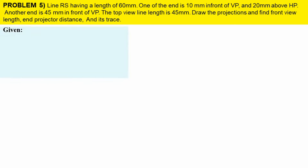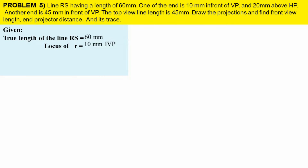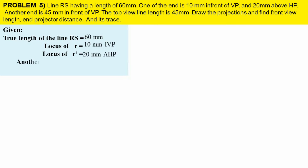Let's see the given data. They are giving the true length, so that is true length of line RS = 60 mm. One end is 10 mm in front of VP, so locus of R = 10 mm. The same end is 20 mm above the HP, so locus of R-dash = 20 mm. Similarly, they are giving another end is 45 mm in front of VP.